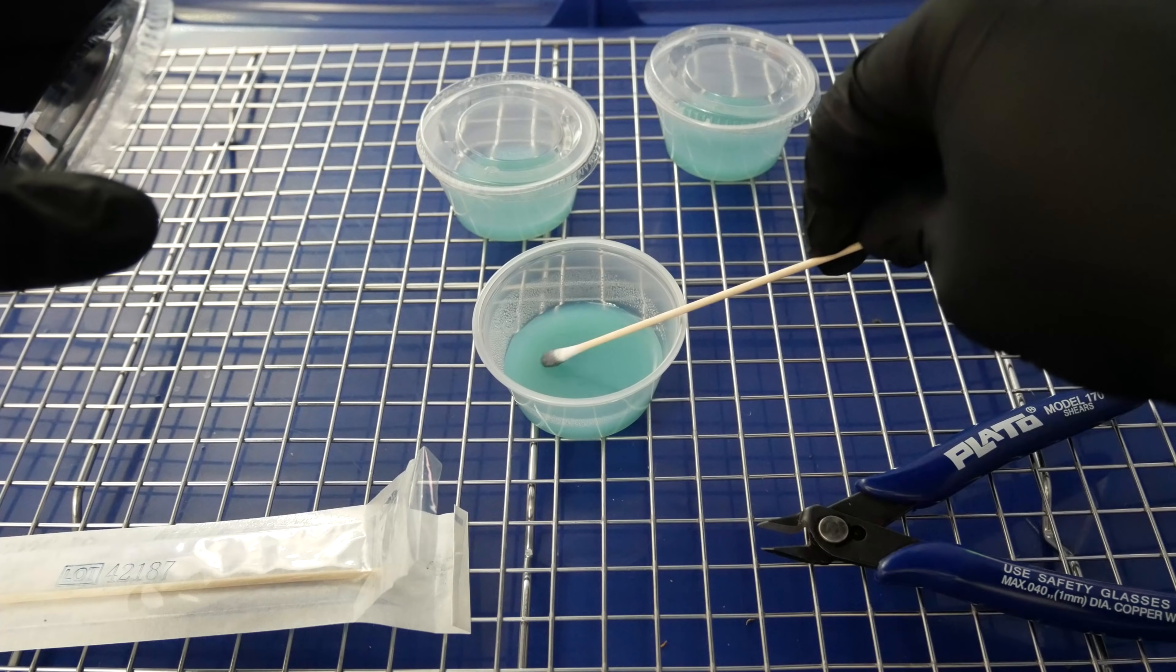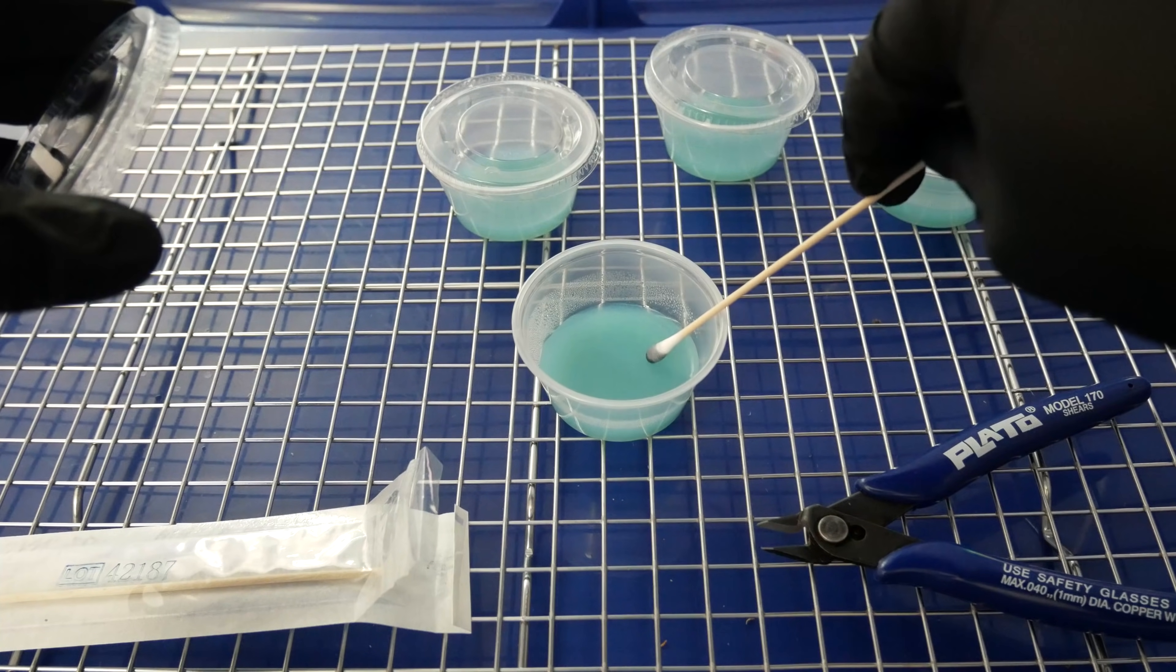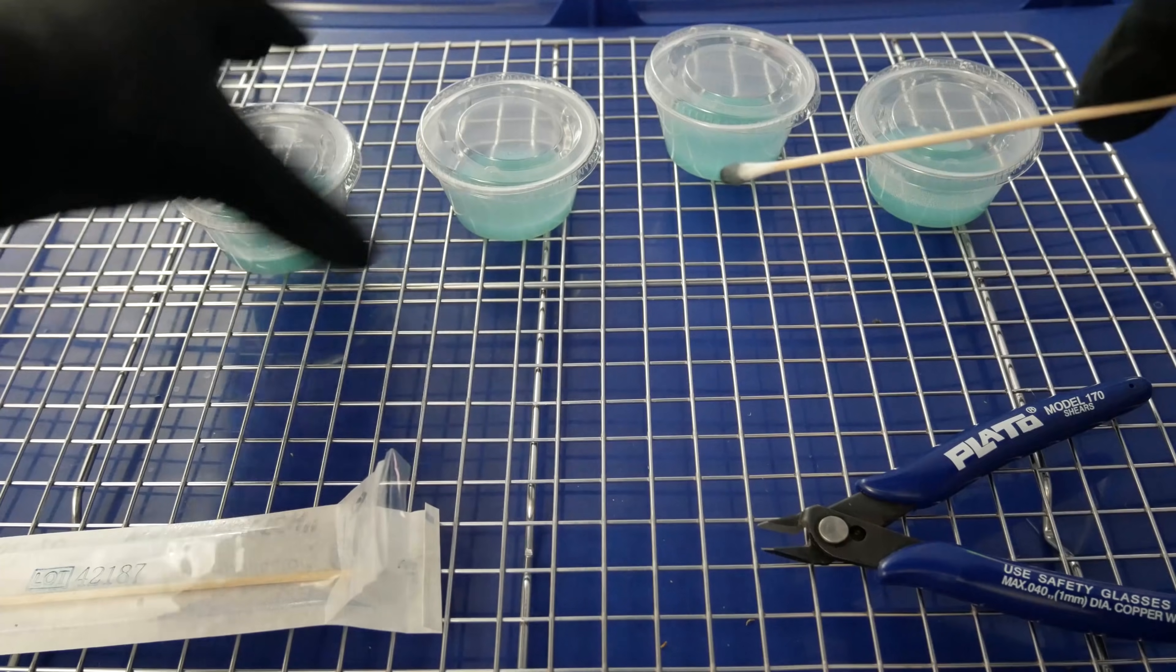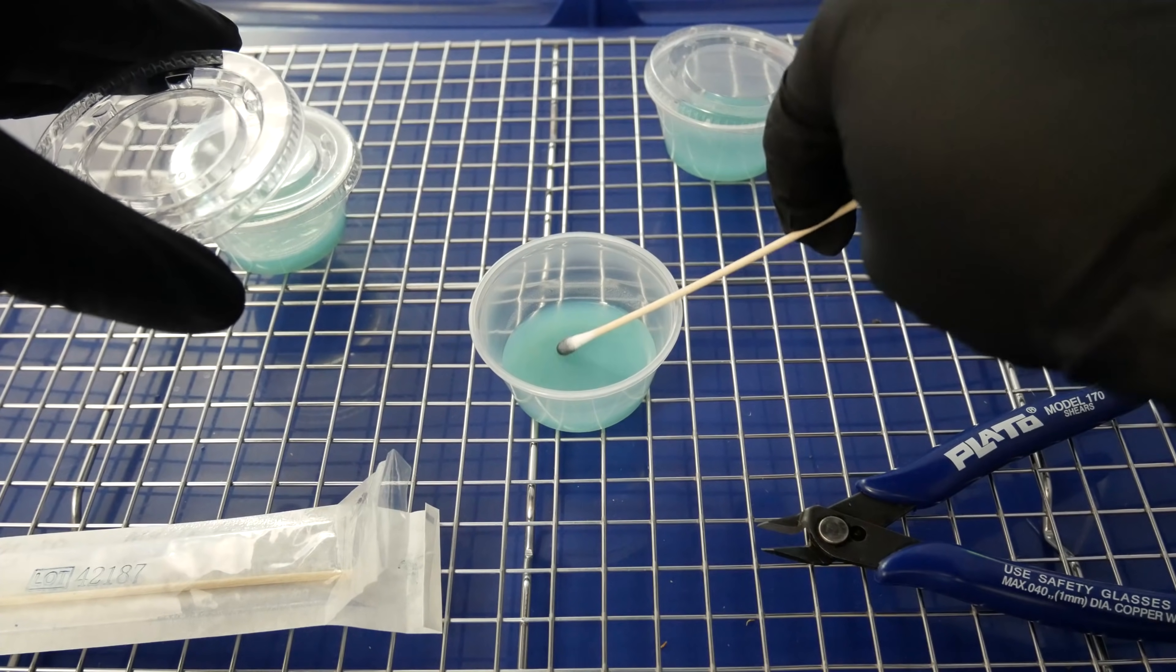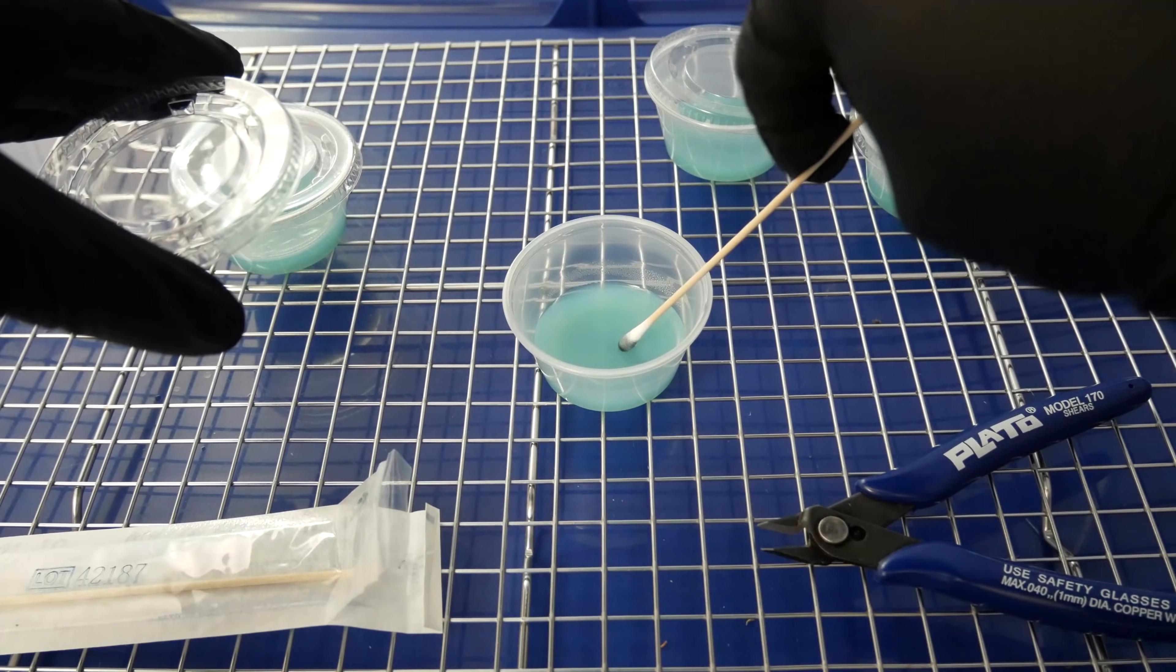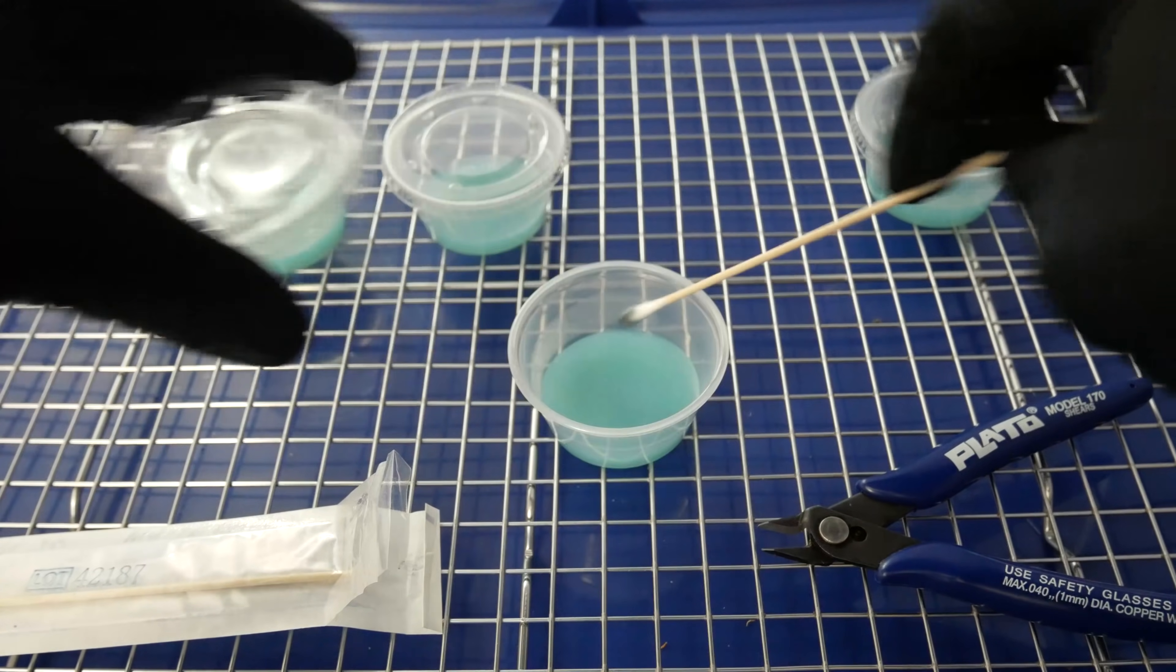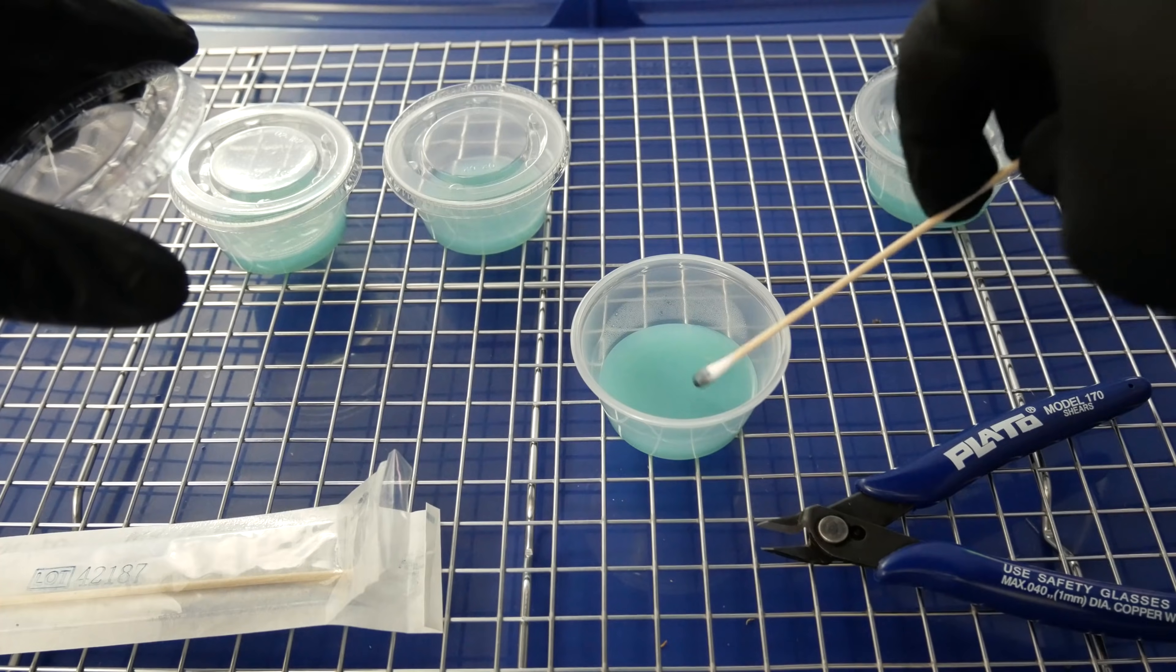And what you want to do is swab the agar with the spore swab. I like doing this little zigzag pattern while twisting the spore swab to get all angles of the swab to make contact with the agar. This will ensure the highest chance that spores are transferring to the agar from the spore swab. So go ahead and repeat this process for a few of my cups here. This will ensure that in case one of them doesn't germinate, at least one or two others probably will.